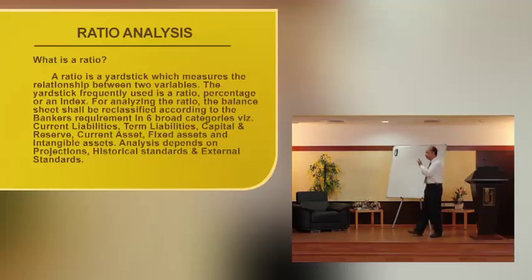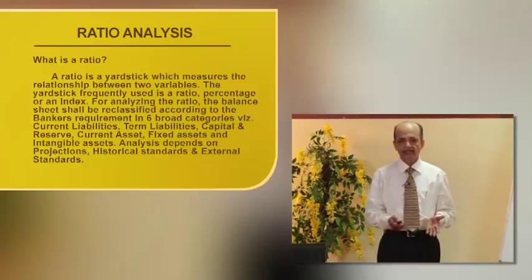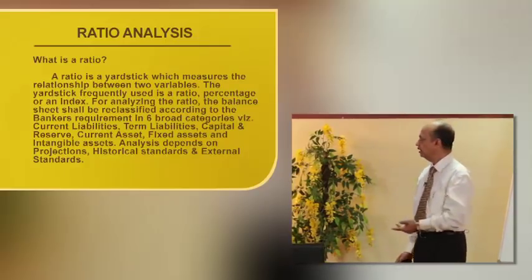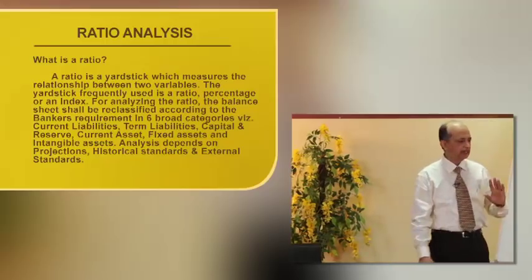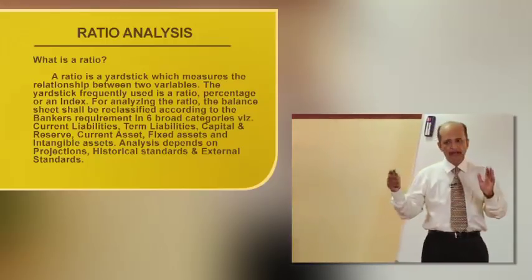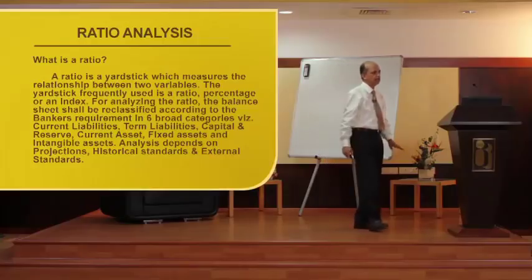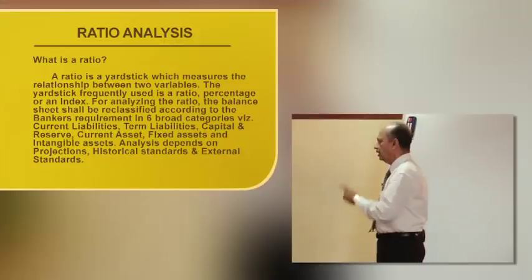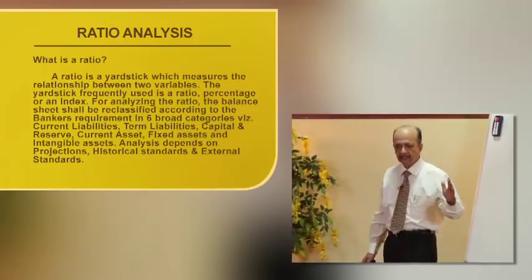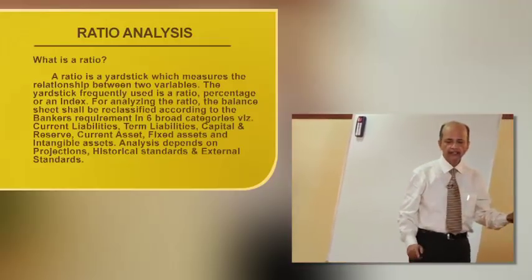A ratio is a yardstick which measures the relationship between two variables. This yardstick is frequently used as a ratio or a percentage or as an index. For analyzing the ratio, the balance sheet shall be reclassified because when the banker gets the balance sheet, it will be reclassified into mainly six heads: current liabilities, term liabilities, then capital and reserve. That will come in the liability side and the asset side, that is fixed assets, current assets and intangible assets.